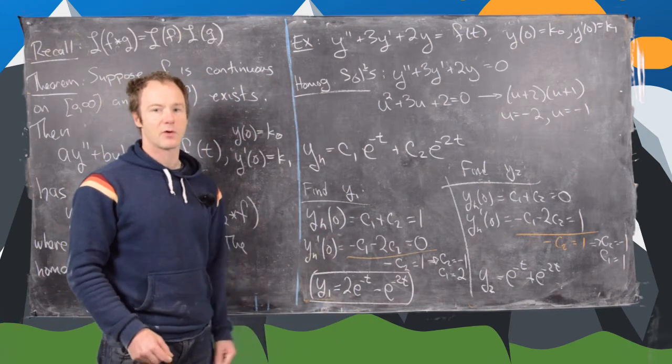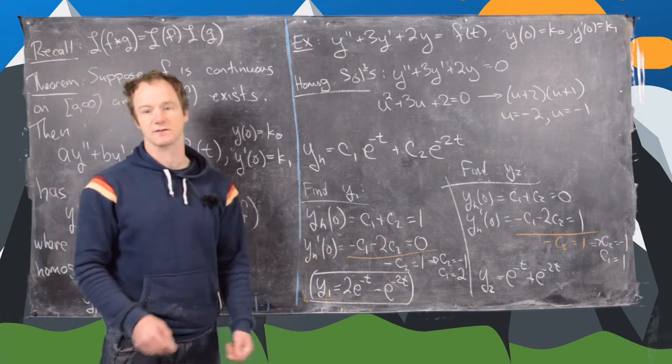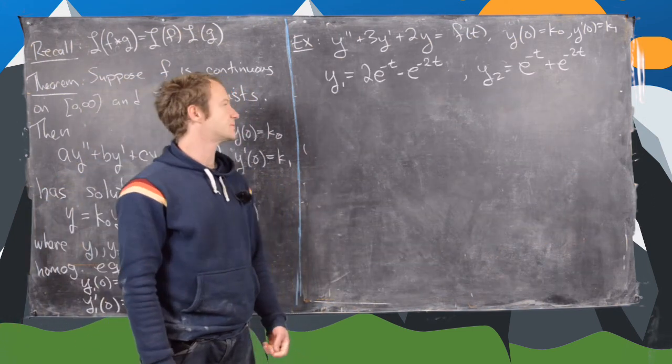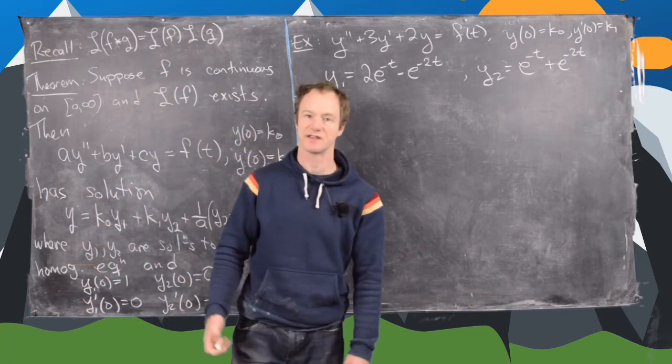So now what I'm going to do, I'll clean up the board. And then after I clean up the board, I will move on with the rest of the solution. Okay. So on the previous board, we found these functions y1 and y2, which are important to the solution via this theorem.